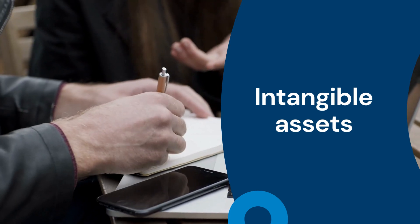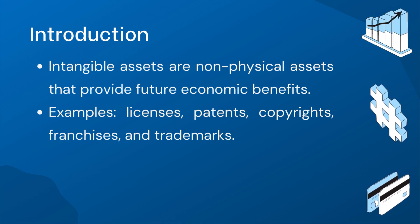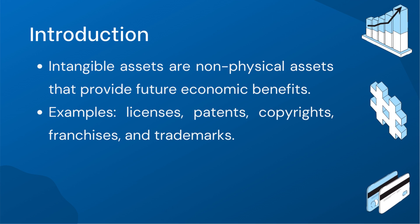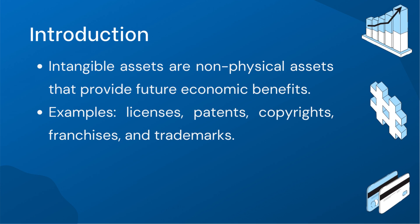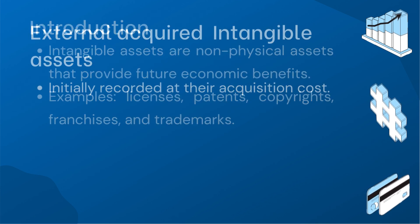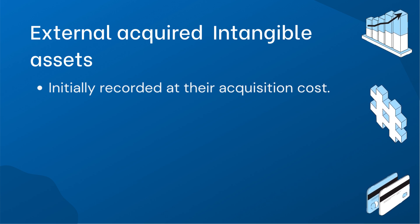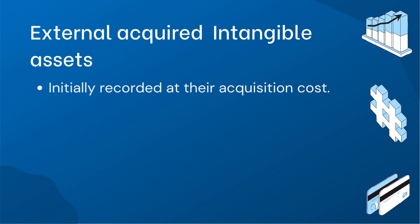Now let's look at intangible assets and how they contribute to business success. Intangible assets are non-physical assets that hold economic value and provide future benefits to a business. Examples include licenses, patents, copyrights, franchises, and trademarks. These assets provide businesses with exclusive rights, privileges, or advantages that enhance their market position and generate future economic benefits. When a company acquires intangible assets from external sources, such as purchasing licenses or patents, the initial accounting treatment involves recording these assets at their acquisition cost. This cost includes not only the purchase price but also any additional expenses directly related to the acquisition, such as legal or consulting fees.